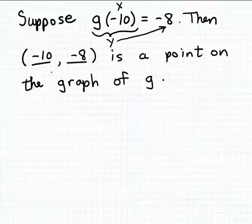So if we interpret this ordered pair as the coordinates for a point, then we would know that the point minus 10, minus 8, the point with these coordinates, is going to be a point on the graph of the function g. And so this is how we would fill in the blanks in this example.